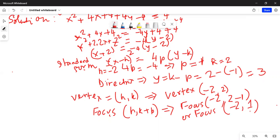So I have the directrix y equal to 3, vertex is minus 2, 2, focus is minus 2, 1 of this given parabola equation.